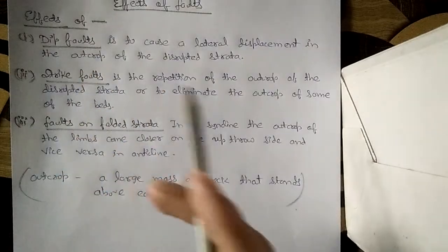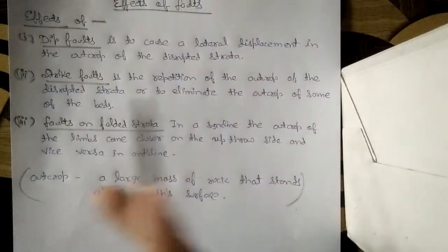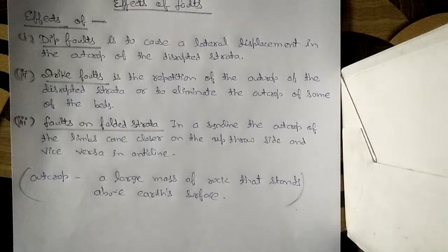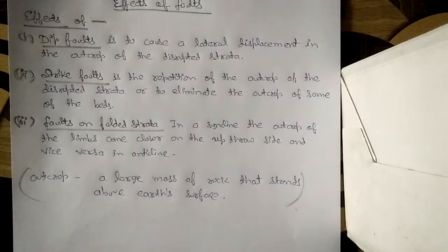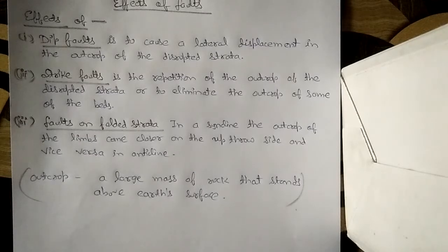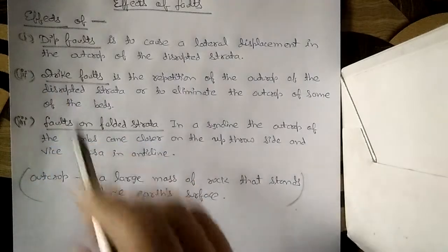The effect of a dip fault is that it causes lateral displacement in the outcrop of the disrupted strata — those rock layers which are disrupted and not even. Faults cause lateral displacement, moving along the surface, and the displacement is done on the surface part.